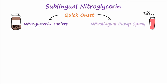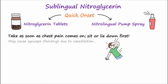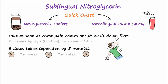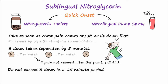Two common sublingual forms that have a quick onset include nitroglycerin tablets and the Nitrolingual pump spray. The sublingual route will bypass the first-pass breakdown of the drug. These should be taken as soon as the chest pain comes on. The patient should sit or lie down first, as the medication may cause syncope or fainting due to the vasodilation that it causes. Guidelines indicate that three doses can be taken separated by five minutes. If chest pain is not relieved within five minutes after the first dose, then 9-1-1 should be called.